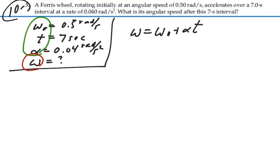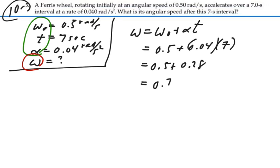Solve this for omega. So we have 0.5 radians per second plus 0.04 radians per second squared times 7 seconds, 0.5 plus 0.28 gives us 0.78 radians per second. So that is our final angular velocity.